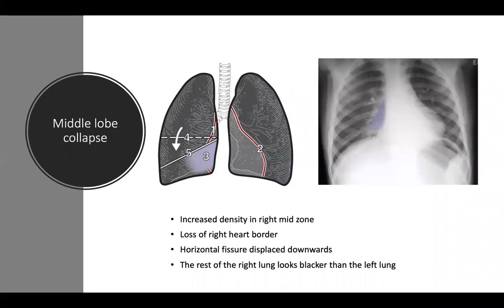That was an example of middle lobe atelectasis or middle lobe collapse. Features include increased density in the right mid-zone, loss of the right heart border, horizontal fissure displaced downwards, and the rest of the right lung appearing blacker than the left. The diagram shows: one — right heart border, two — left heart border, three — increased density in the right mid-zone, four — normal horizontal fissure position, five — horizontal fissure displaced downwards. The x-ray shows the collapsed middle lobe in purple.